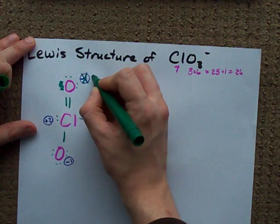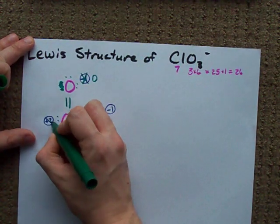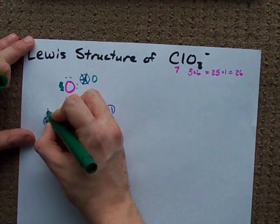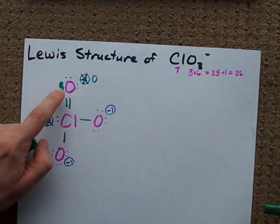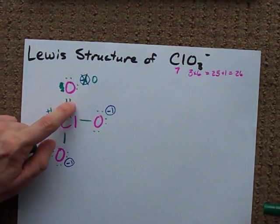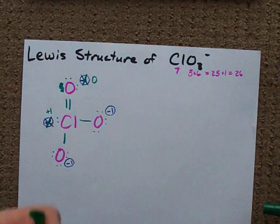Once we do that, the formal charge here becomes 0. The formal charge here becomes plus 1. Notice this oxygen now has 1, 2, 3, 4, 5, 6 electrons around it. That's how many it brought.